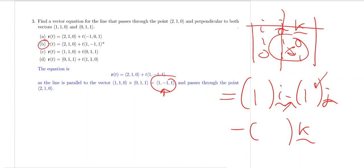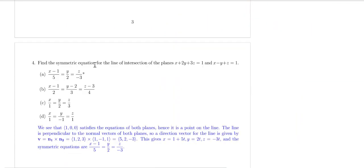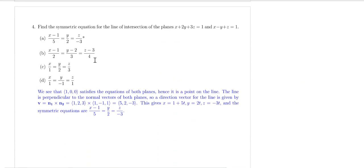The principle is the same. In order to find the equations of the line, you need a point that is on the line and also the directional vectors. It's just that the directional vectors is not always given directly, so you have to compute it separately depending on the type of the question.